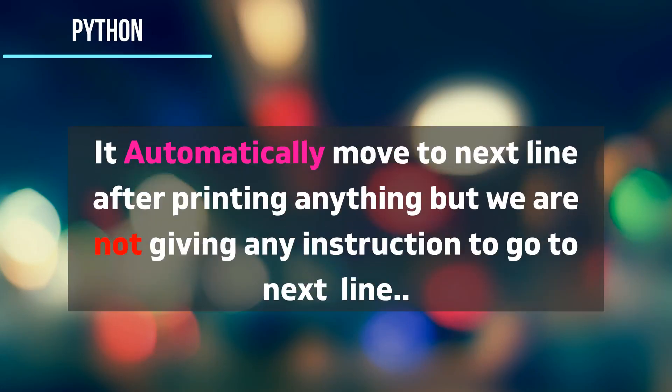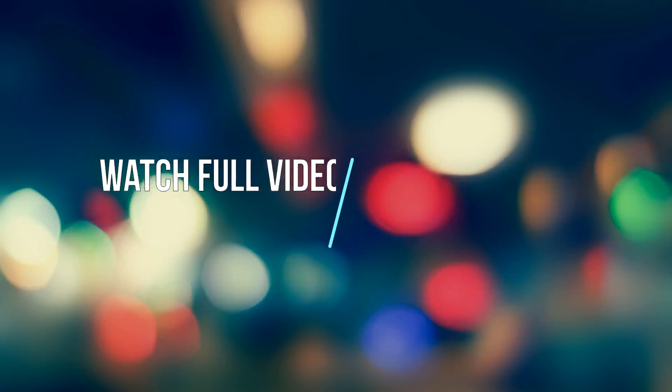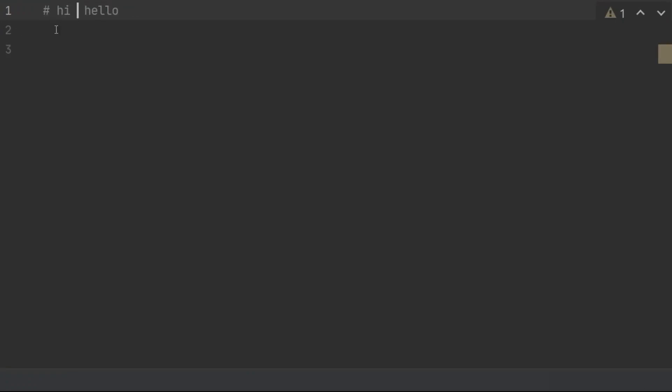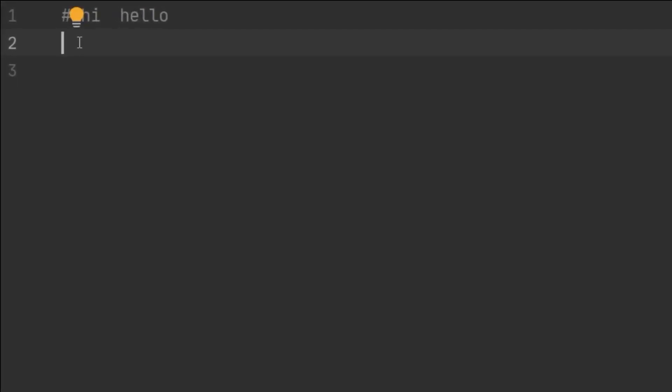In Python it moves to the next line automatically with every print statement. To overcome this problem we have a solution, and that's the aim of this video. Watch the full video to learn how to print all characters on the same line, not on consecutive lines.